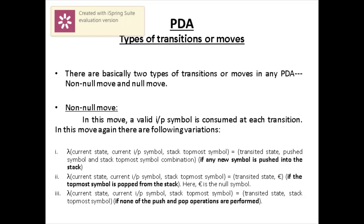The right-hand side of the transition function contains two entities: the transited state (same as in finite automata), and the push symbol combined with the stack topmost symbol. This means the symbol you want to push into the stack and the current topmost symbol that is already there — these two combinations you write as the second entity in the right-hand side. There are three variations in the non-null move. This pushing-related variation works when any new symbol is being pushed into the stack.